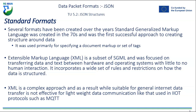After that there were other attempts, but one that people might be more familiar with — especially if you work on production equipment — is Extensible Markup Language, otherwise known as XML. This is a subset of SGML and was focused on transferring data and text between hardware and operating systems with little to no human interaction, incorporating a wide set of rules and restrictions on how data is structured. However, XML is relatively complex, and while suitable for general internet data transfer, it is not very effective for lightweight data communications typically used in Internet of Things applications and protocols such as MQTT.